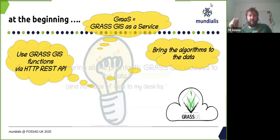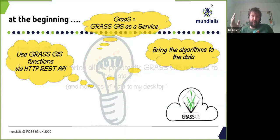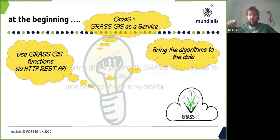We thought about it and said: if it would be possible to use GRASS GIS functions via an HTTP REST API call — to bring the algorithms to the data — then we could do something we originally called GRASS, which is the acronym for GRASS GIS as a Service. That turned out later to the name Actinia. The underlying idea was that because GRASS GIS is open source, we have no license restrictions. We could deploy 20, 30, 40 cores and didn't have to care about license restrictions at all, which is really an advantage in the open source world.